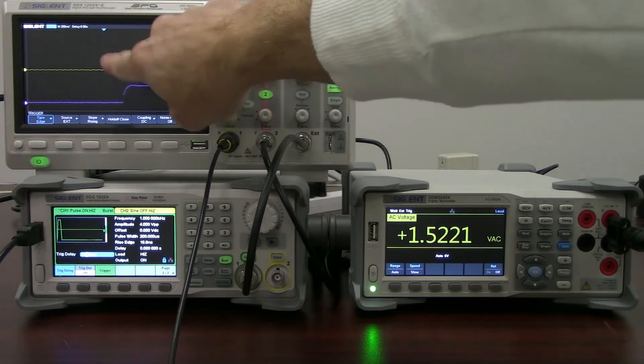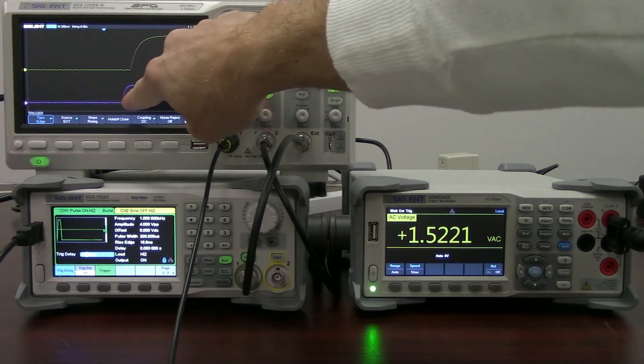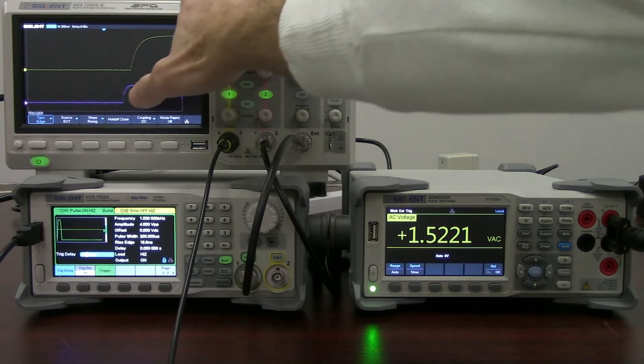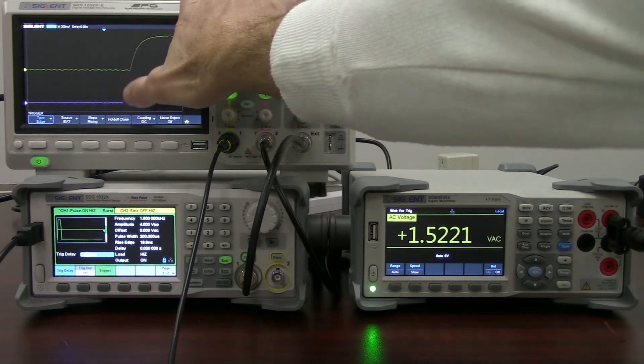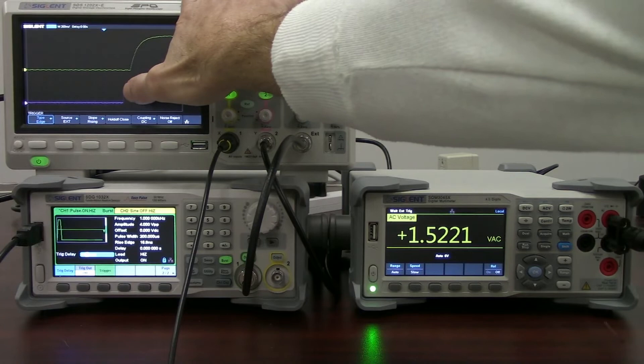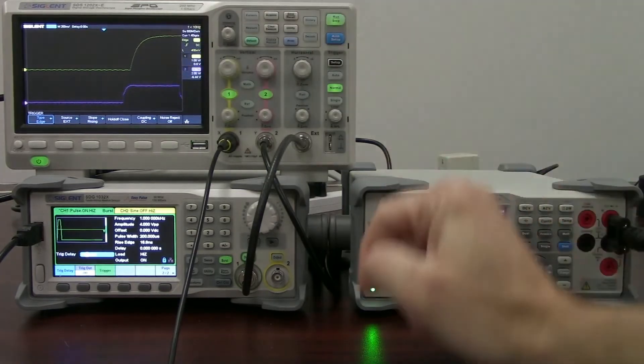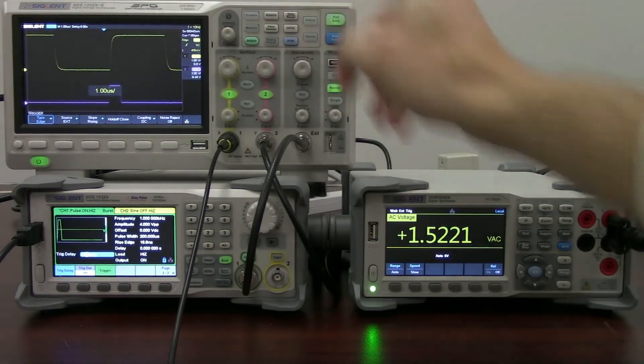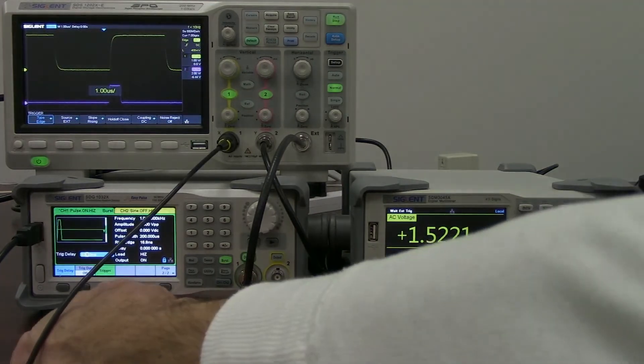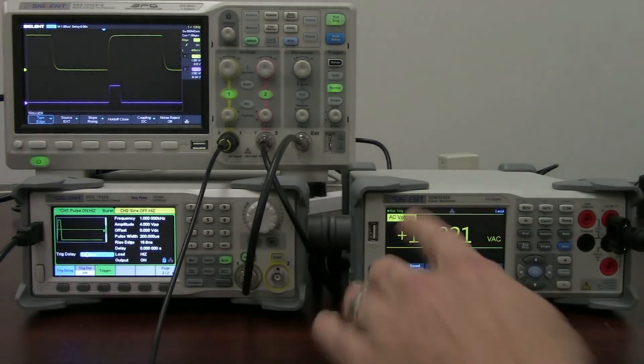So here is our trigger point. And we're at 200 nanoseconds per division. So that's 200 nanoseconds. So we're at about 375 nanoseconds of delay. So that is something that you're going to want to keep in mind when you're making those measurements. But I'll perform that again.